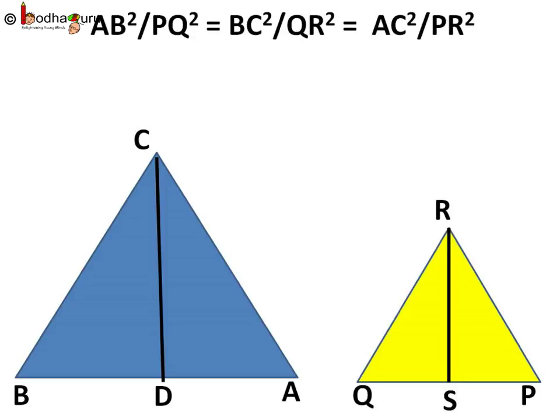So basically, the ratio of area of similar triangles is the ratio of square of the corresponding sides. That's all in this lesson. Bye bye.